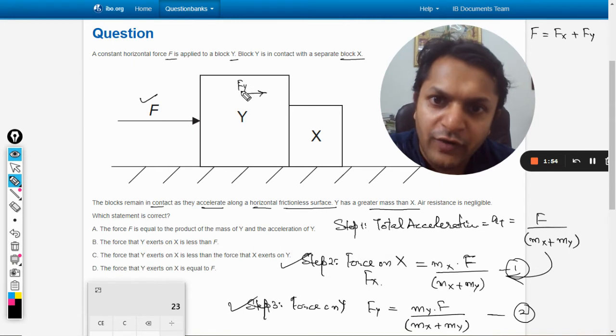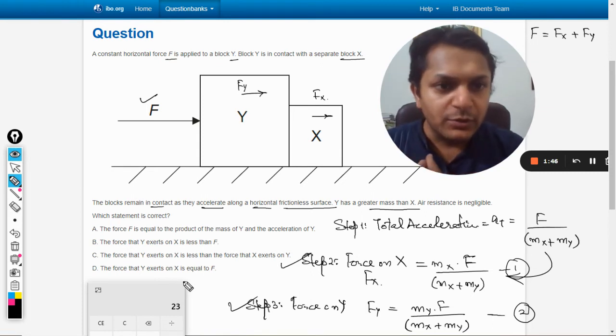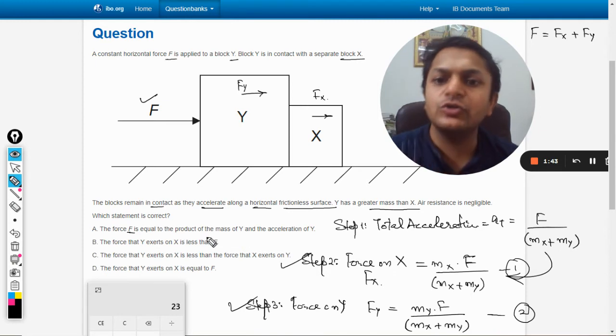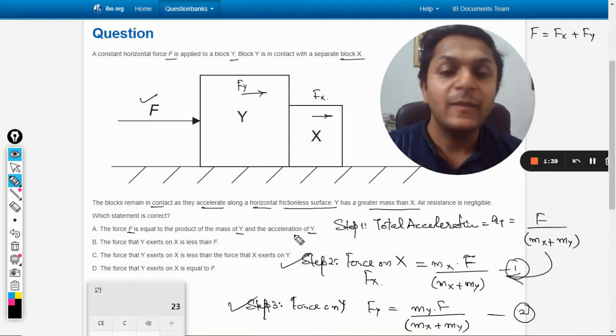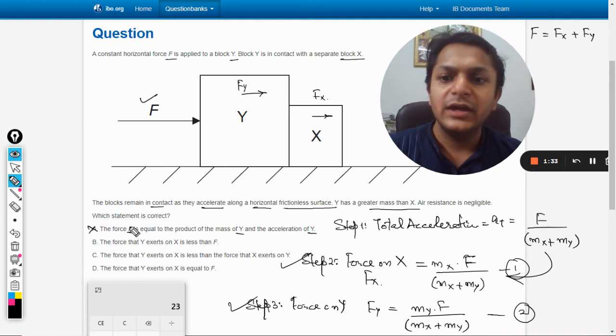Now let us move to the options. Option number one, two, three, four. Option number one: the force F is equal to the product of mass of Y and acceleration of Y. Exactly not, because that will be equal to F_y. So this is wrong.